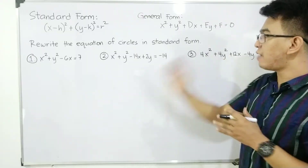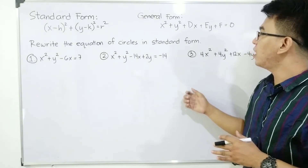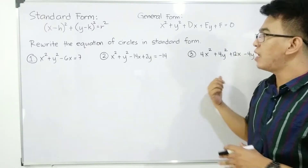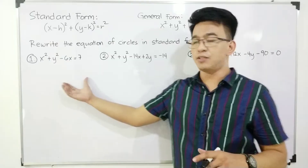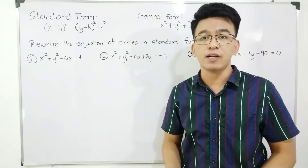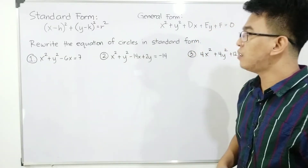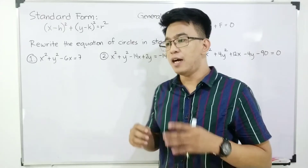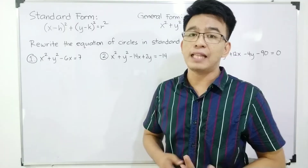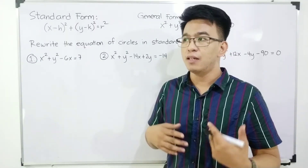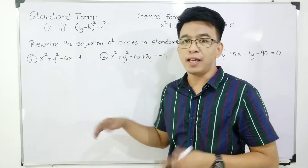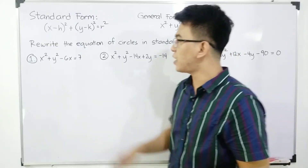The given equations here are in general form, and our target is to write these equations in standard form. Eventually, we will find their center and radius. Before we start, it is important to review how to complete the square, since that is one of the skills needed before tackling this topic. But along the way, I will also discuss completing the square. So let's start with number one.